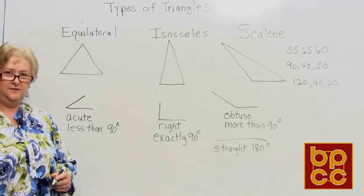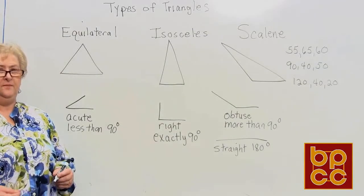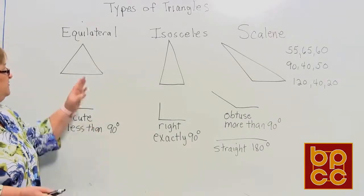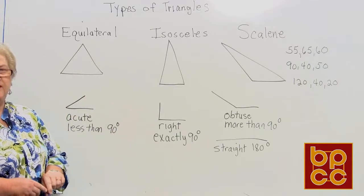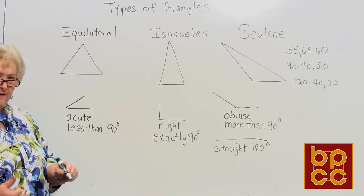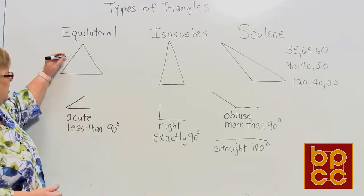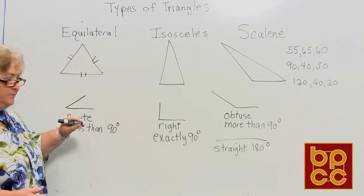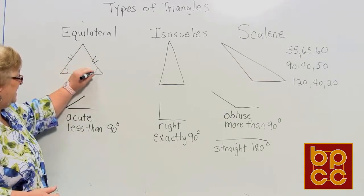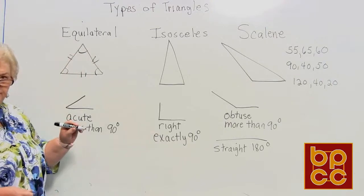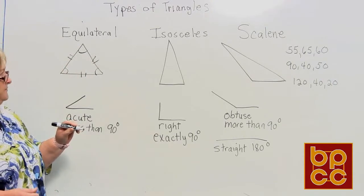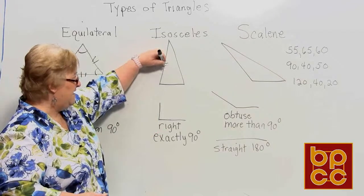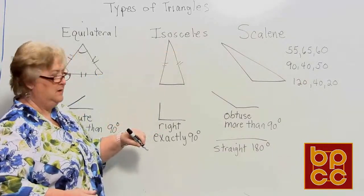In this lesson we're going to talk about different types of triangles. The first type of triangle is called an equilateral. Equilateral means that all three sides are the same length and all three angles are the same.